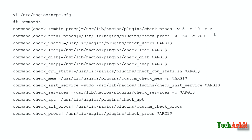Now I'm adding one more command called check_total_procs, which checks that total processes should not reach more than 150 warning and 200 critical. Based on your requirement you can change these values. I also added check_user - how many users logged into the machine - with warning and critical levels, and check_disk, check_swap, check_cpu_stats, check_mem, and individual services to check service status.